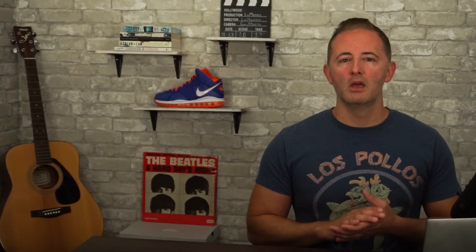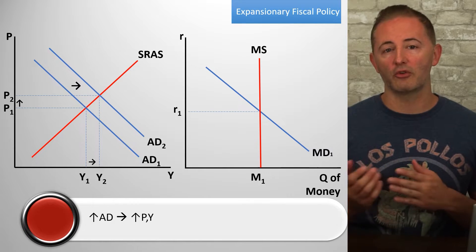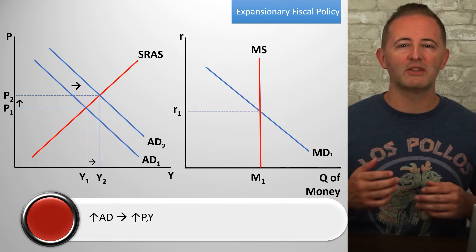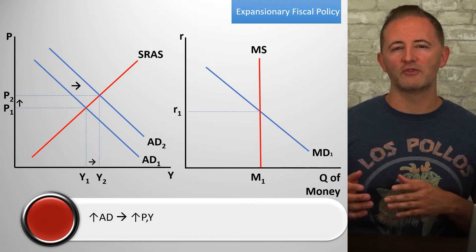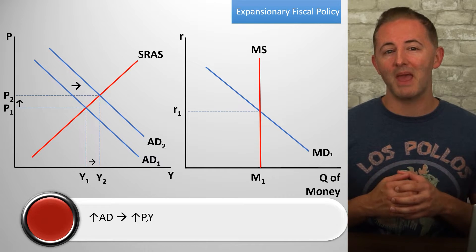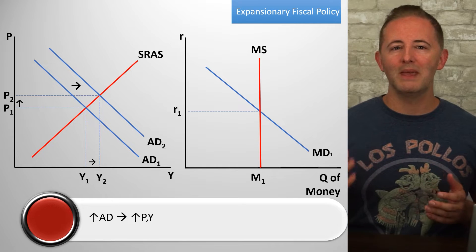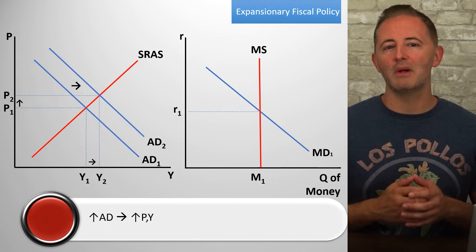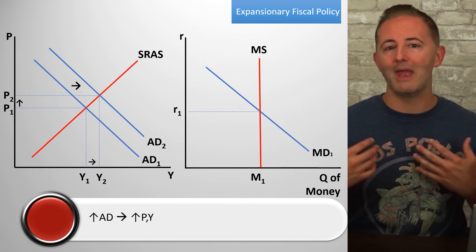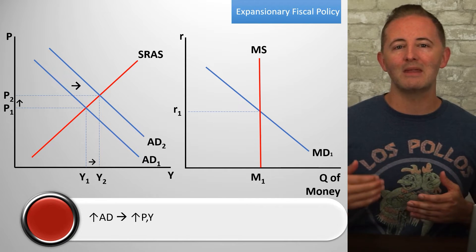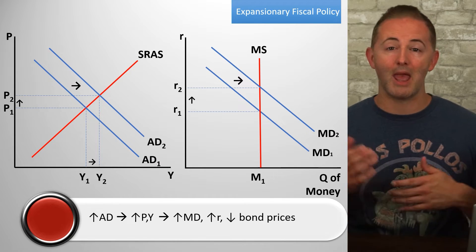Now the new stuff: fiscal policy and interest rates. With fiscal policy, we're going to start with the ADAS model and then see how it affects the money market model. The order we go in matters and you'll see why. So let's do expansionary fiscal policy — shifting the AD curve to the right. The price level and real output both increase. The question is, how will this affect the money market? We know that this won't affect the money supply curve since only actions of the Federal Reserve affect the money supply. So it must be money demand that's impacted. If you think back to what shifts the money demand curve, the two biggest things are changes in the price level and real output. The demand for money is positively related to both P and Y. So since P and Y both increase as a result of expansionary fiscal policy, money demand increases, shifting the MD curve to the right and raising the nominal interest rate and lowering bond prices.